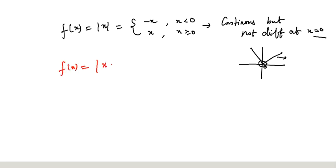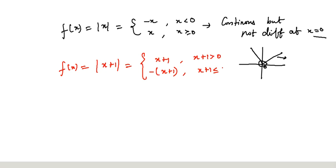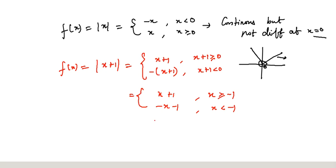f(x) = |x+1|. Try to write it as a piecewise defined function. You can write: (x+1) if x+1 > 0, and -(x+1) if x+1 < 0. Simplifying, this becomes: (x+1) if x > -1, and (-x-1) if x < -1.